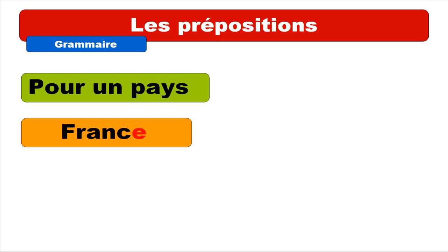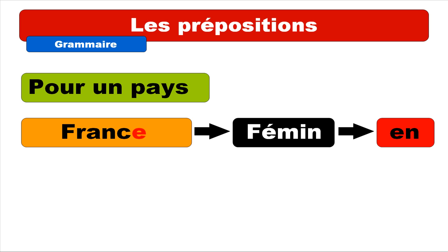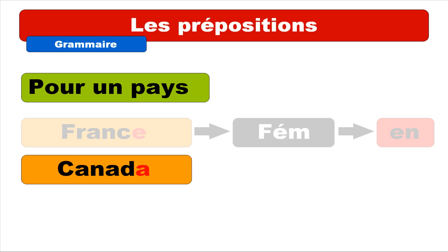The best way to see that is to spot the final letter. In this case, France is ending with an E — as you can see, it's in red — and it does mean that this country is feminine. So the preposition you will have to use with this country will be EN.